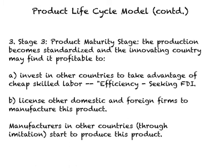In the third stage, called the product maturity stage, production becomes standardized. It becomes very easy for other firms, once they have the technology, to replicate the process or produce the product on their own. At this stage, the innovating country may find it profitable to invest in other countries and start production units there to take advantage of cheap skilled labor. Examples include Japan, South Korea, and China, where a lot of foreign investment occurred because companies wanted to make use of cheap skilled workers.